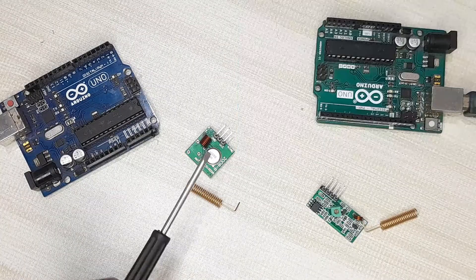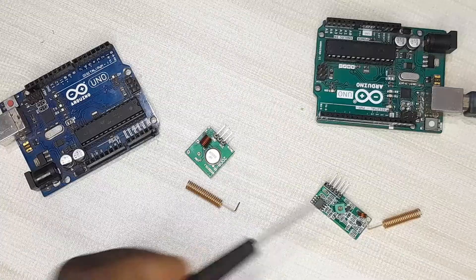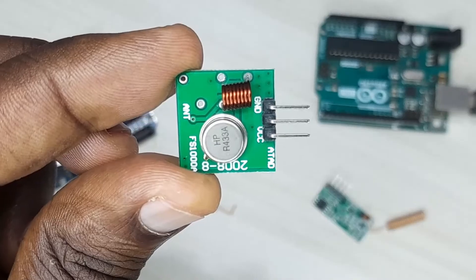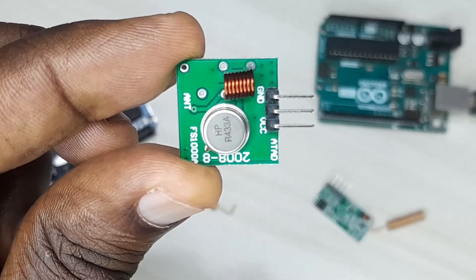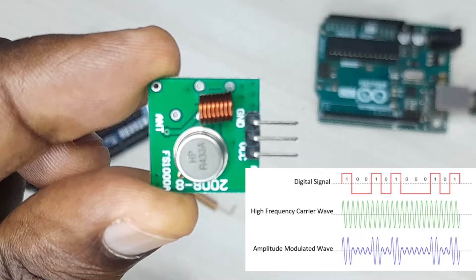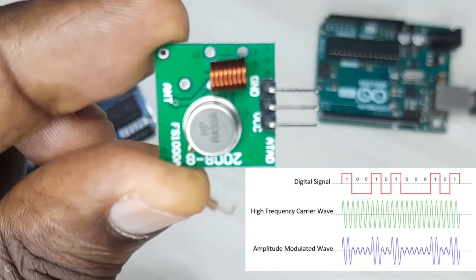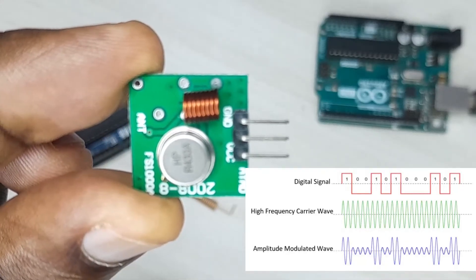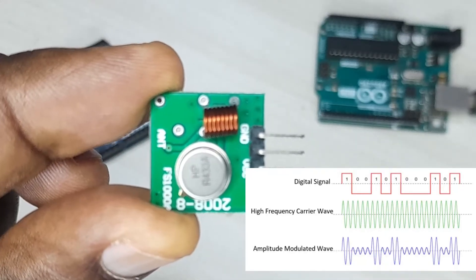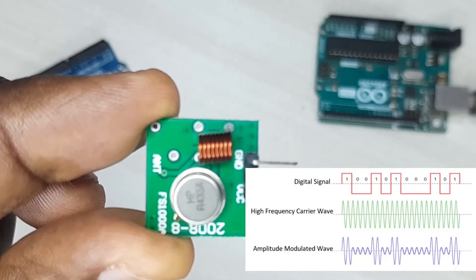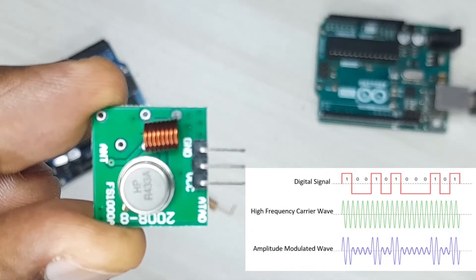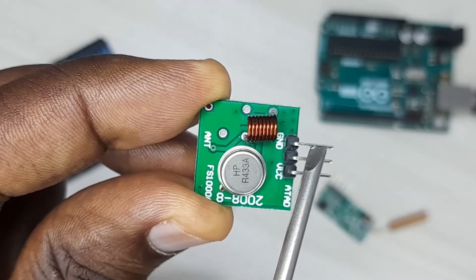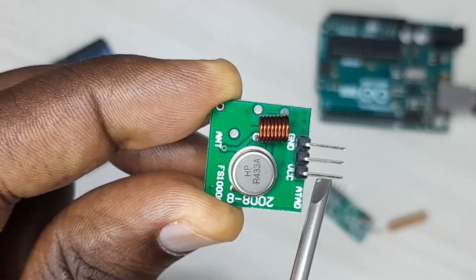This is the transmitter module. It is simply a surface acoustic wave resonator tuned to operate at 433 MHz. When the data input is high, the oscillator generates a constant RF output wave at 433 MHz, and when the data input is low, the oscillator stops its operation, resulting in an amplitude modulated wave. This is what we call the amplitude shift keying technique. As you can see, this module has only three pins: ground, VCC, and data.